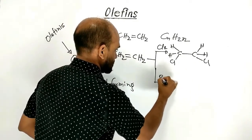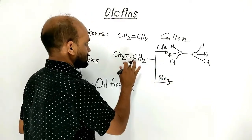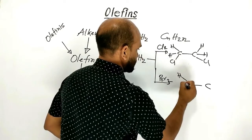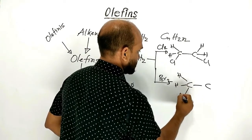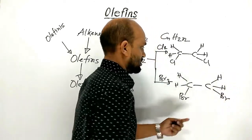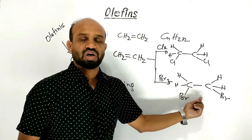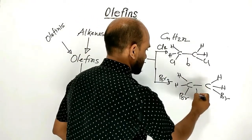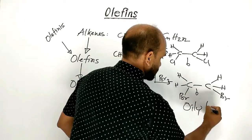Reacting with bromine, ethene forms hydrogen, hydrogen, bromine, hydrogen, hydrogen, bromine. 1,2-dibromoethane. These compounds are oily liquid.